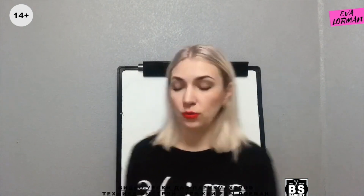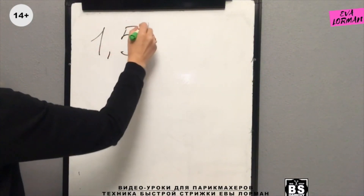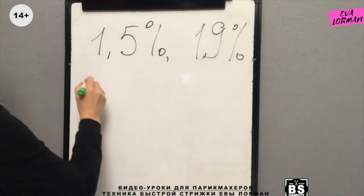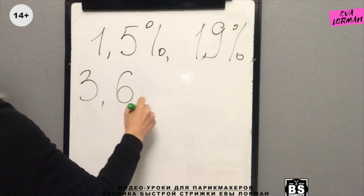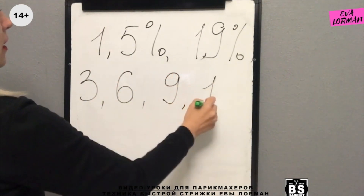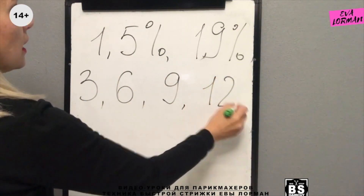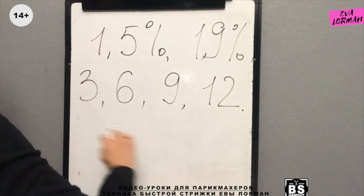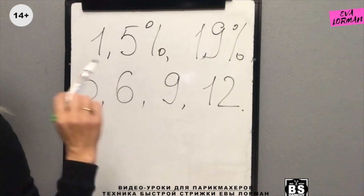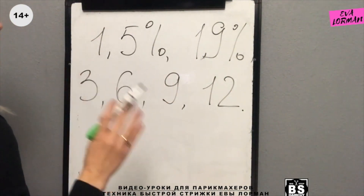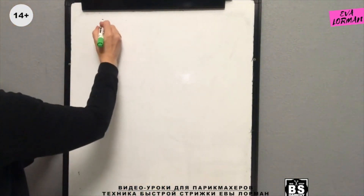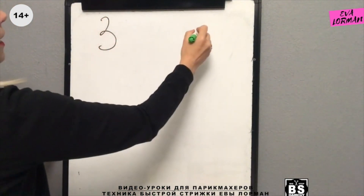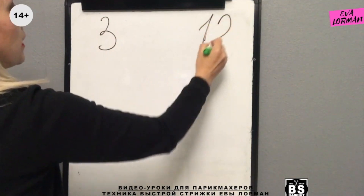So what are the main oxides? 1.5, 3, 6, 9, and 12 percent. All oxides are available from any manufacturer of professional cosmetics. For example, you have 3% and 12% oxides.